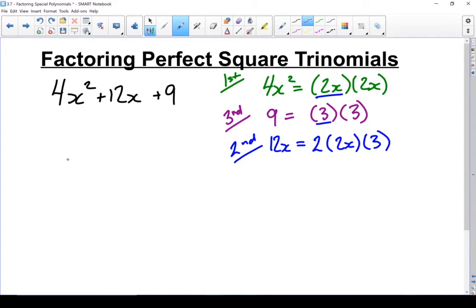And as soon as we know it's a perfect square trinomial, I can factor it into two binomials. 2x is my first term. 3 is my second term. And the trick is figuring out what my sign is going to be. And my sign is whatever sign is on my middle term. There is my perfect square trinomial.